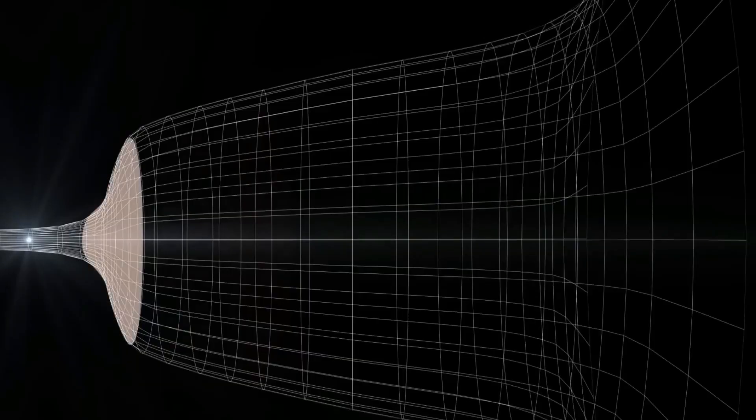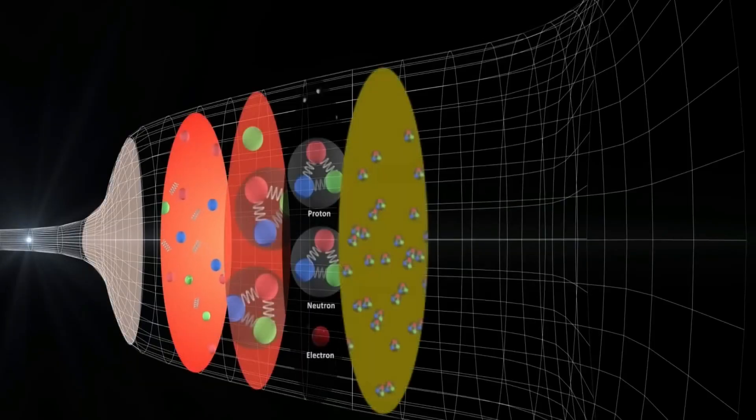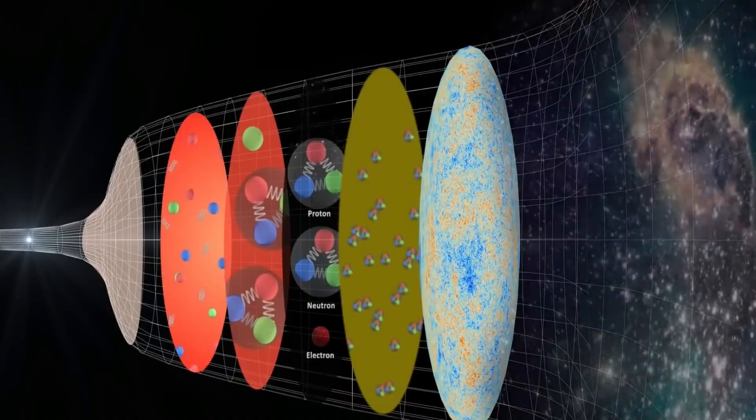The rapid expansion, known as cosmic inflation, lasted for mere fractions of a second, as proposed by physicist Alan Guth's 1980 theory. Then, mysteriously, it all came to a halt.